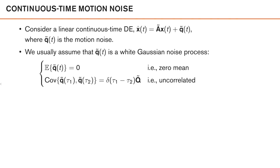Suppose that the continuous time motion model is described by a linear differential equation, such that the time derivative of the state is a linear function of the state plus some process noise. From the previous video, we know how to discretize the deterministic part of this by preferably finding the exact solution to the differential equation. So in this video, we'll focus on the noise term, which we haven't discussed that much previously.